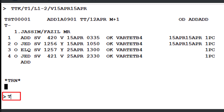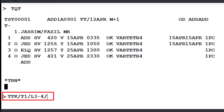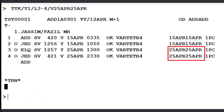Next, enter the TTK transaction once again, followed by a slash and the letter T with a number 1, indicating TST record number 1. Then, add another slash followed by the letter L and the range 3-4 to specify lines 3 through 4 of the TST. Next, include another slash, the letter V for the validity identifier, followed by the not valid before date and the not valid after date. Press Enter to update the TST record. Lines 3 and 4 of the TST are now successfully updated with the specified validity dates.